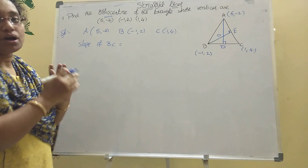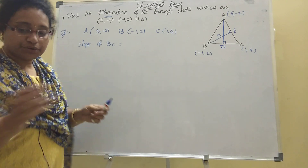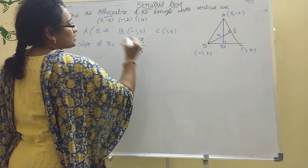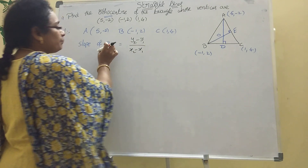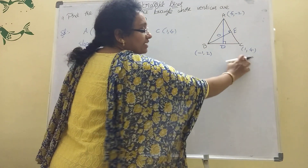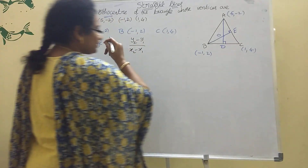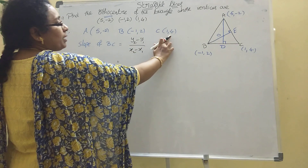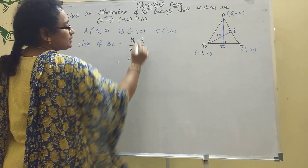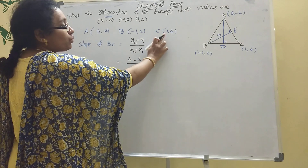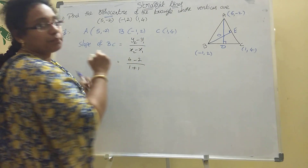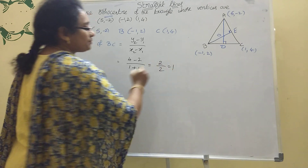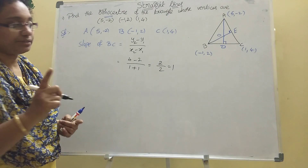The slope formula is (y2 - y1) / (x2 - x1). Taking B(-1, 2) as (x1, y1) and C(1, 4) as (x2, y2): slope of BC = (4 - 2) / (1 - (-1)) = 2 / 2 = 1. So slope of BC is 1.